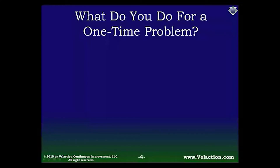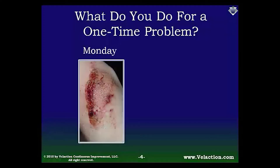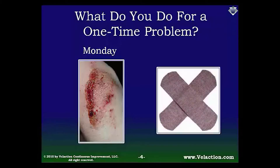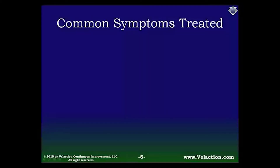Let's start out by talking about how people often handle problems. When there is a single occurrence of something, people tend to treat the symptoms. Imagine you have a child who loves skateboarding. If he comes home one day with a scraped elbow, the treatment is likely to be a band-aid. You are unlikely to take much further action. In general, we treat the symptoms of isolated problems with band-aids.